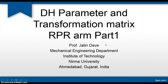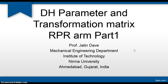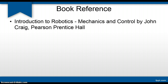Hello students. In this session we will study how to assign DH parameters and calculate the transformation matrix for an RPR type robotic manipulator, where the first joint will be rotating and the second joint will be a slider oriented 90 degrees with respect to the previous one. Our book reference will be Introduction to Robotics by John Craig.